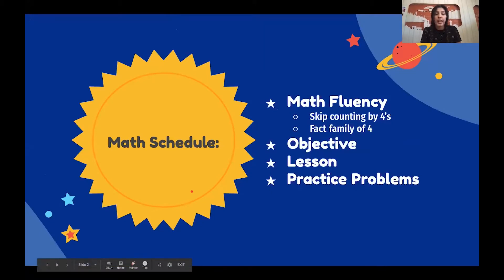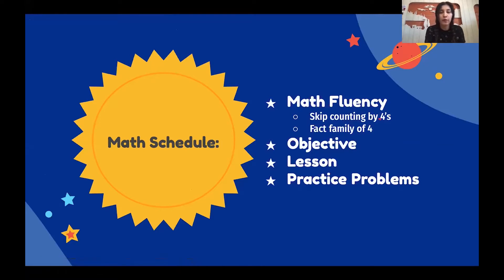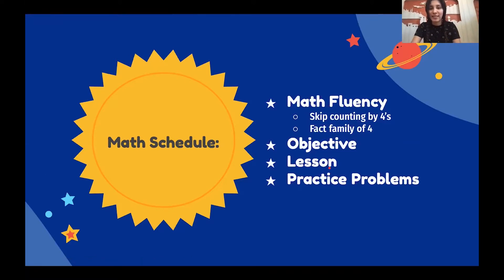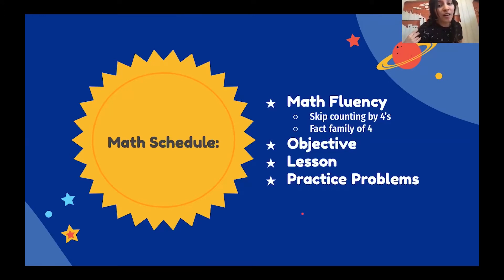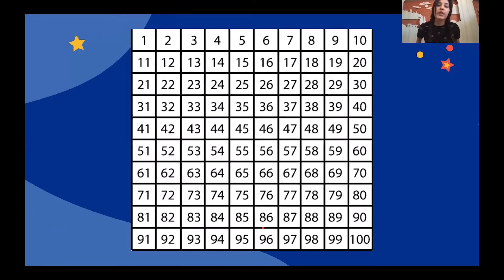Today our math schedule is: we're going to do some math fluency, we're going to skip count by fours, we're going to do some fact family of four, we're going to go over our objective and our lesson, and we're going to do some practice problems. And as you can see, it's all an outer space theme today.